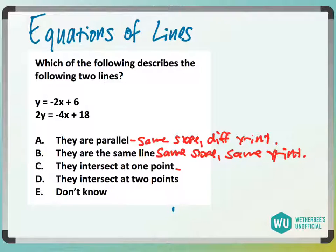They intersect at one point, which would just mean that as long as they have a different slope, they will intersect at some point.